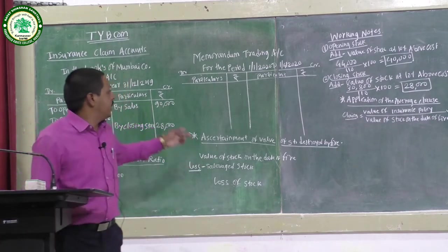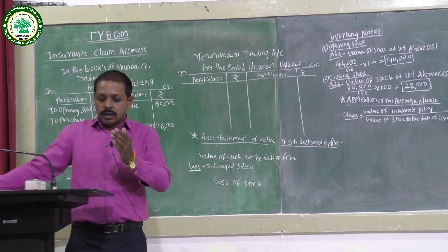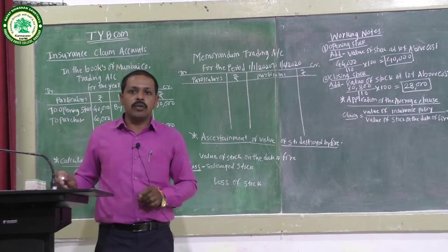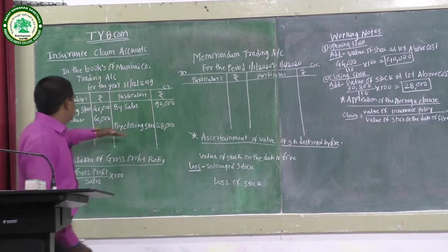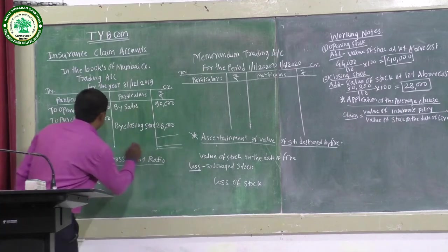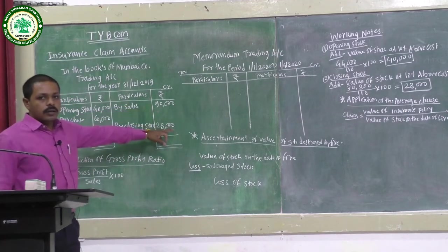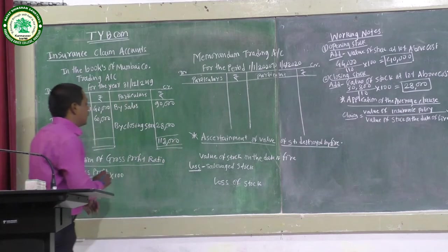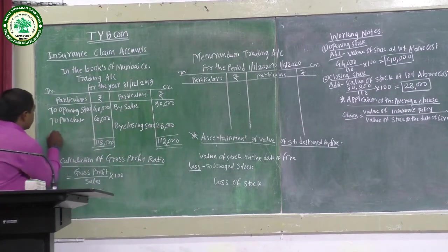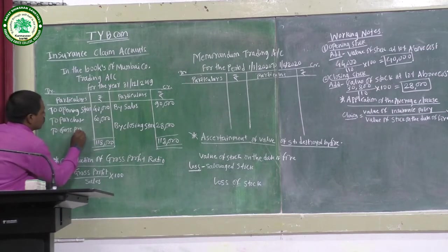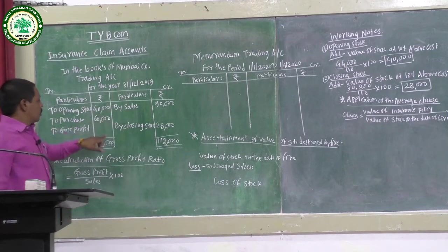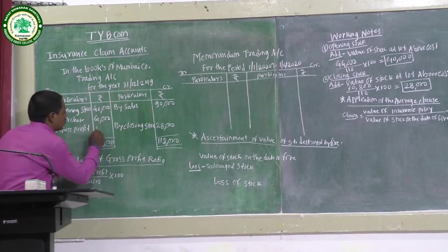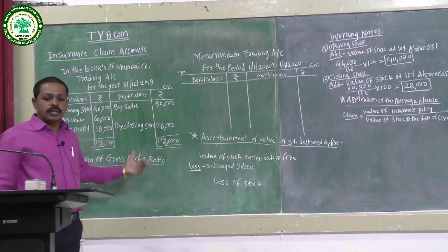The indemnity period is 1st January 2020 to 1st April 2020. The credit side of the trading account totals Rs.1,18,000. Gross profit is calculated as: Rs.1,18,000 minus Rs.40,000 minus Rs.60,000 = Rs.18,000. So gross profit is Rs.18,000.